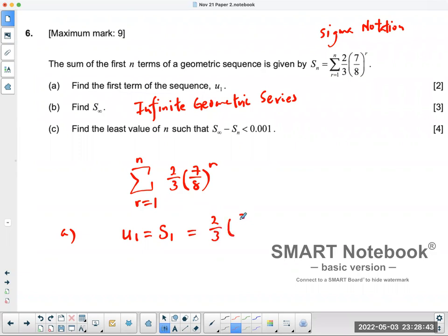That's going to give you 14 over 24, or if you reduce it, 7 over 12. So that's your a value, or u₁.